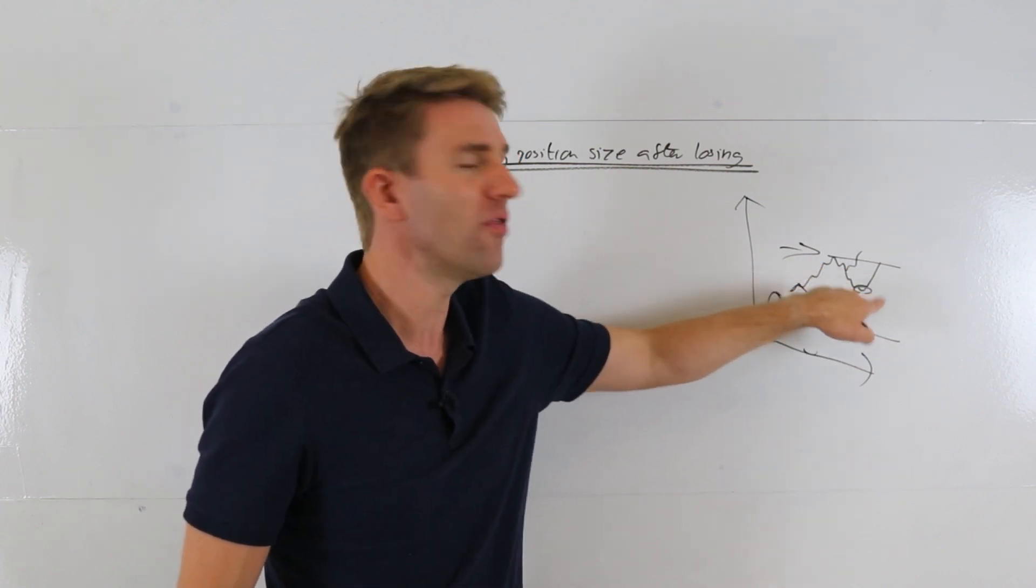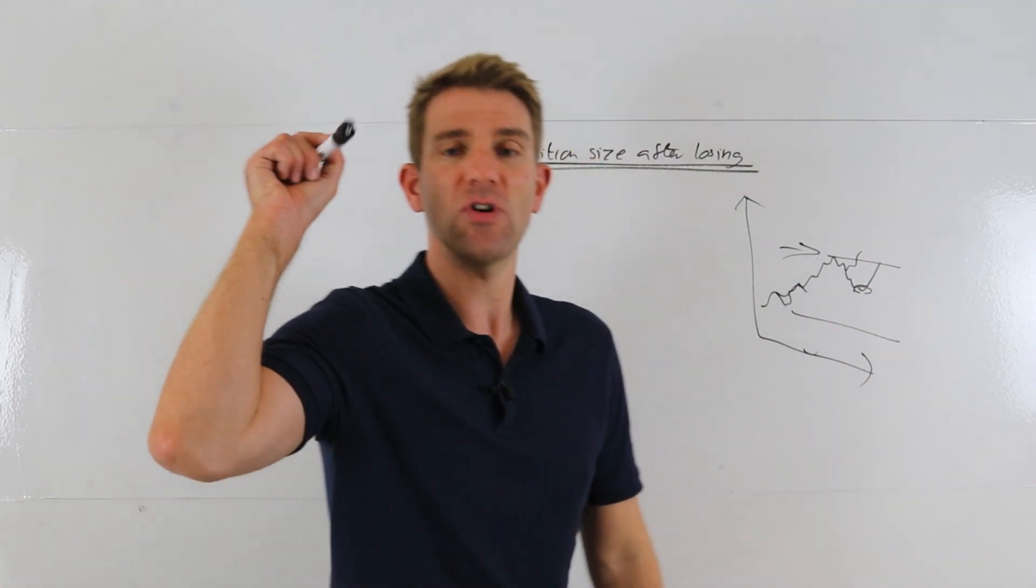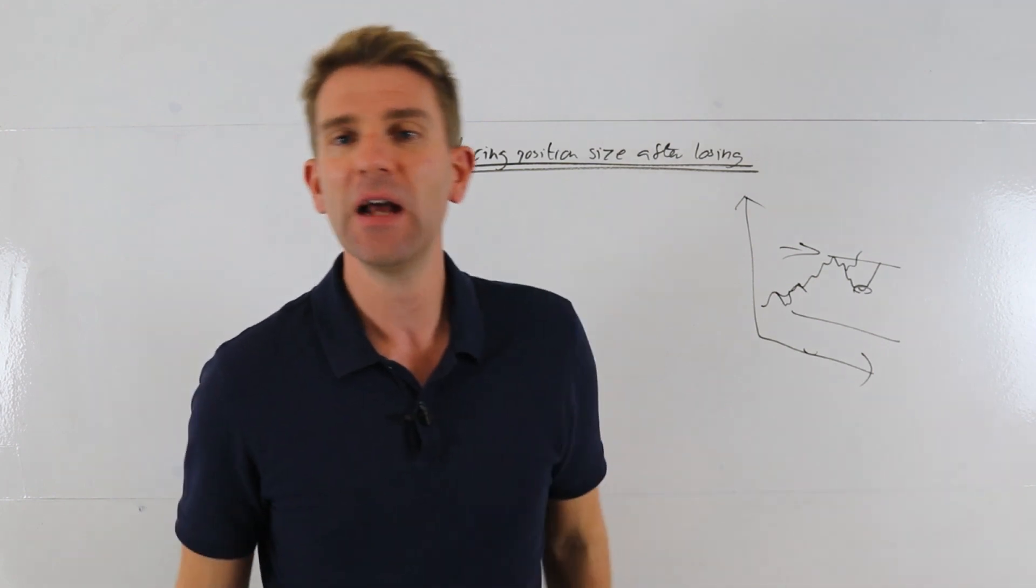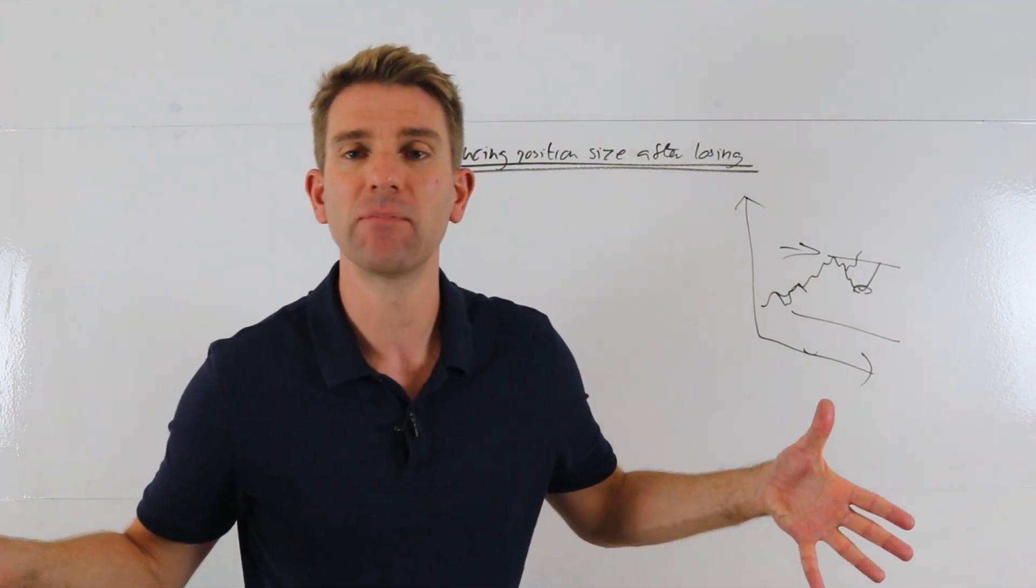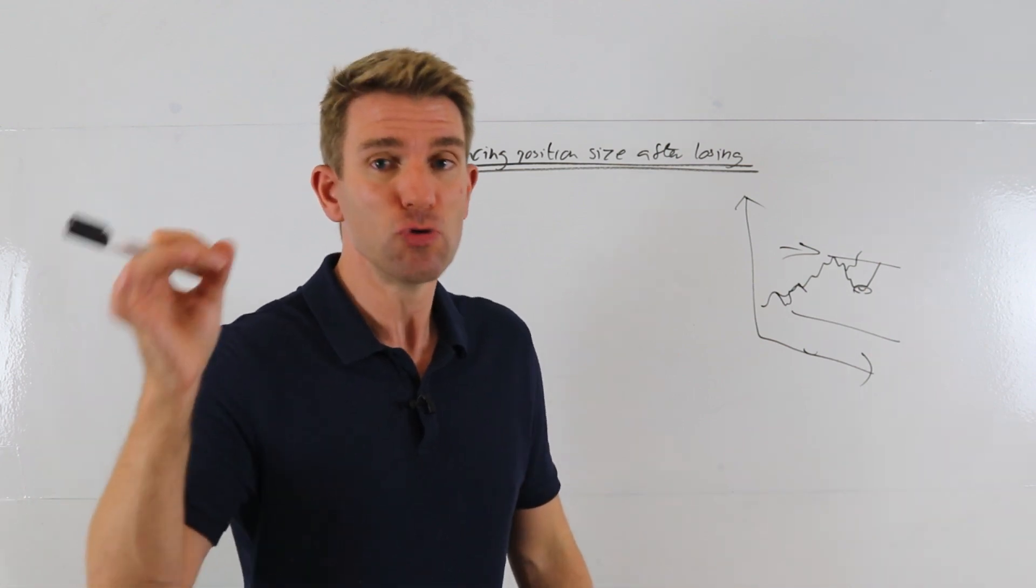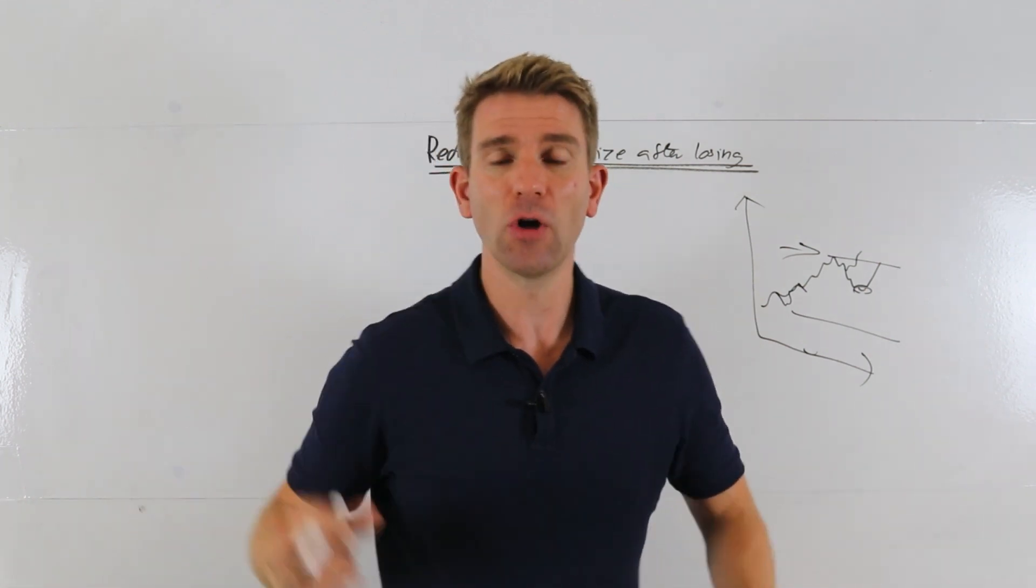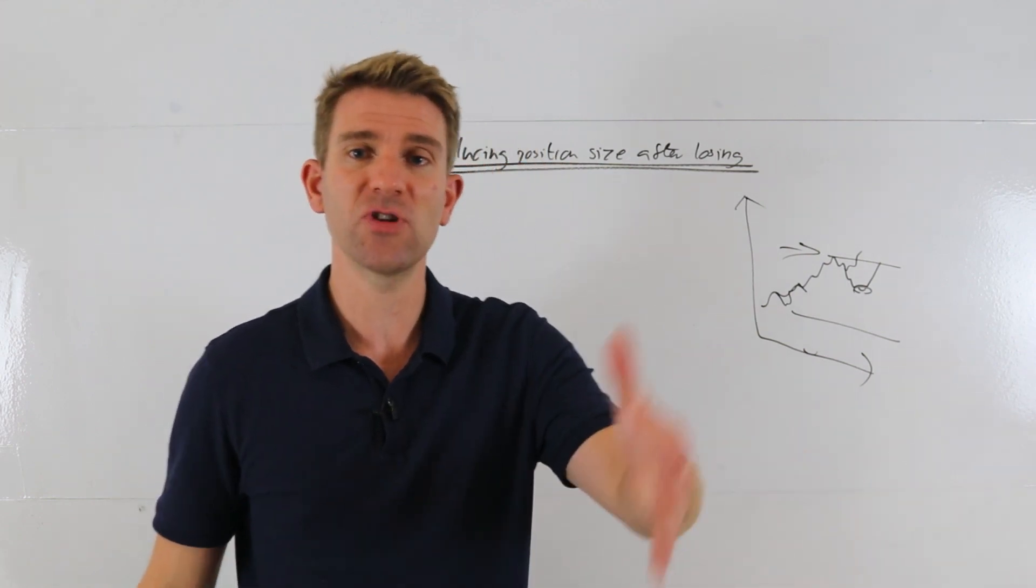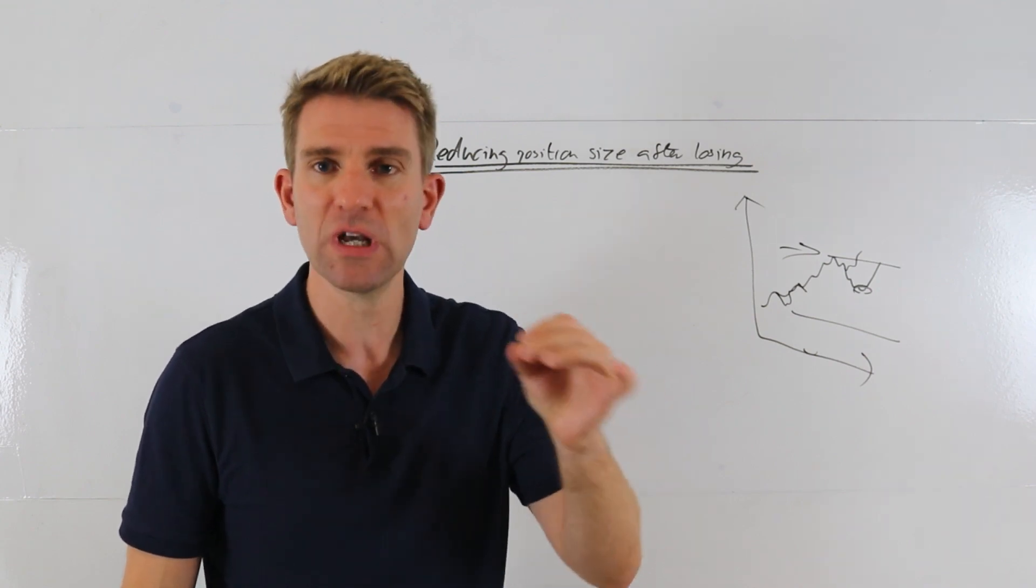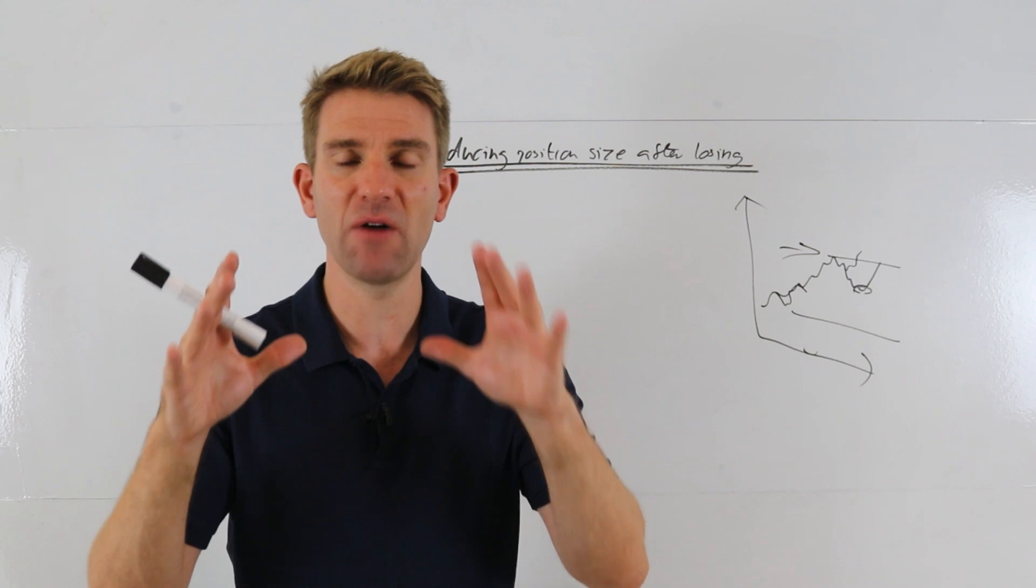So what do I do? I reduce my position size right down, and I mean right down. If you're trading, let's say you're trading £50 a point, just say this is the order of magnitude, guys, you then go down to £2 a point if you're spread betting. If you're trading contracts, you're trading 10 contracts, you go down to one contract. You go right down to the minimum amount, just to go right back to basics.